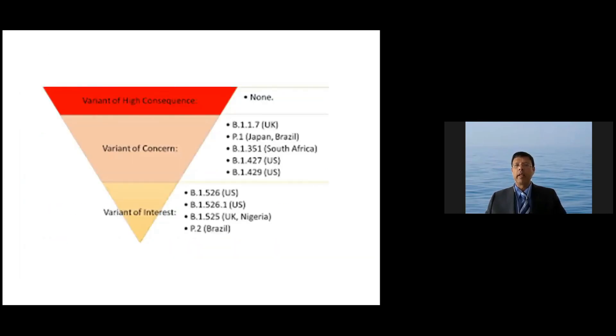So the variants have been classified as variants of concern, variants of interest, and finally variants of high consequence. We don't have any variants of high consequence, but there are a number of variants of concern in the UK, US, in Europe, and rest of the world called WHO, and variants of interest. Now I give certain numbers there and the places that they originated, but there has been a change in nomenclature. That is what I'm trying to discuss in the present talk with regards to the variants of concern and variants of interest.